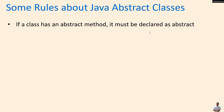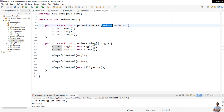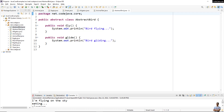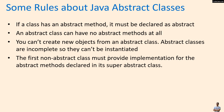Lastly, let's understand some rules about Java object classes. First, if a class has an object method, it must be declared as object — this is obvious. Next, an object class can have no object method at all. For example, an abstract Bird class can have two concrete methods and no object method. Note that you can't create new objects from an object class because they are incomplete and can't be instantiated. The first non-object class must provide implementation for the object methods declared in its super object class.